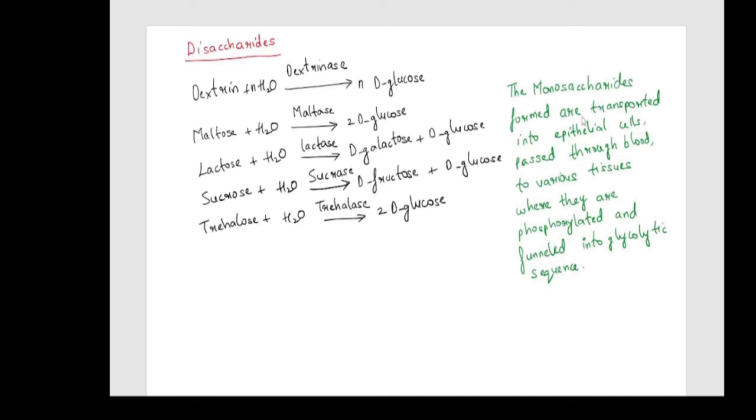These monosaccharides formed are transported into epithelial cells, passed through blood to various tissues where they are phosphorylated and funneled into the glycolytic sequence.